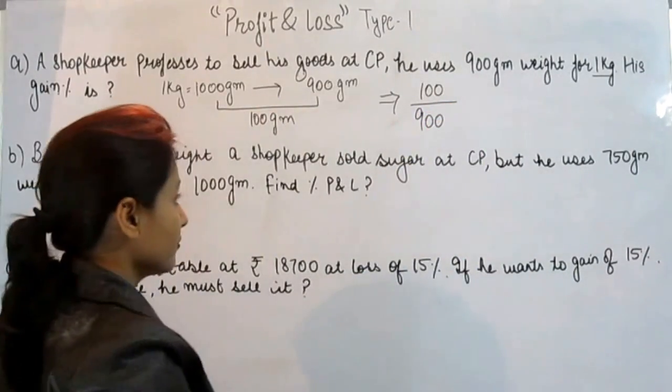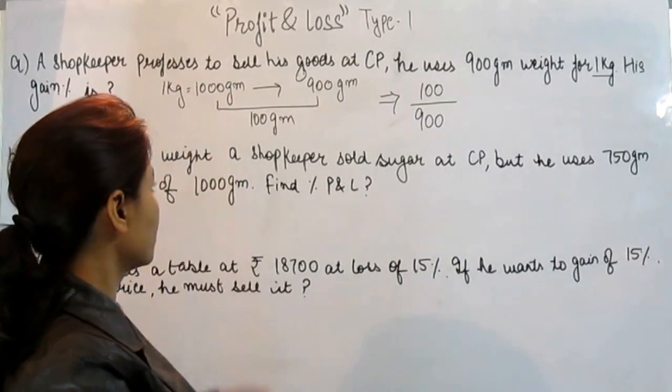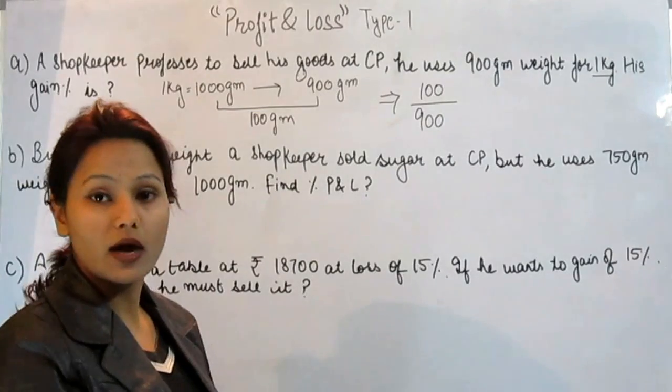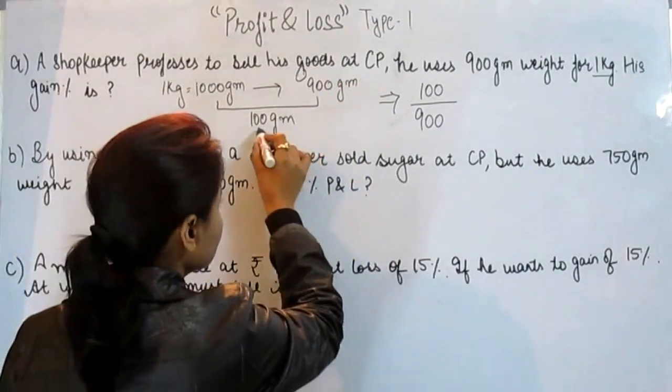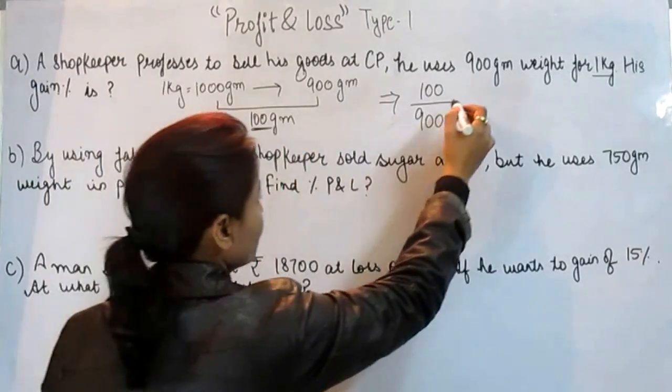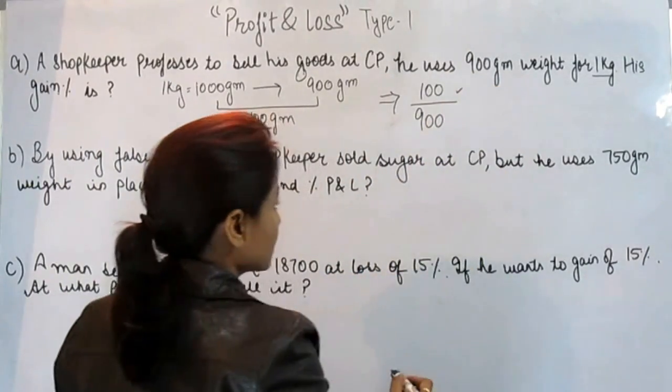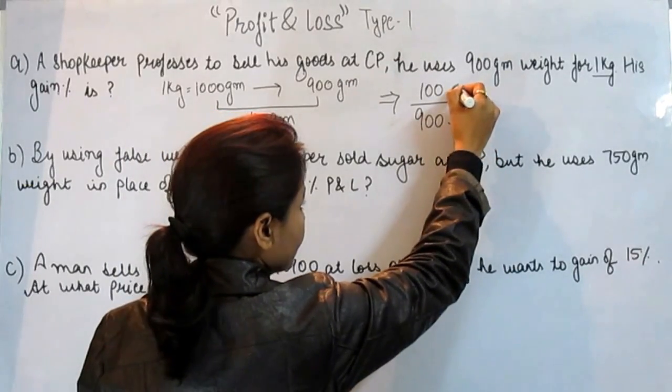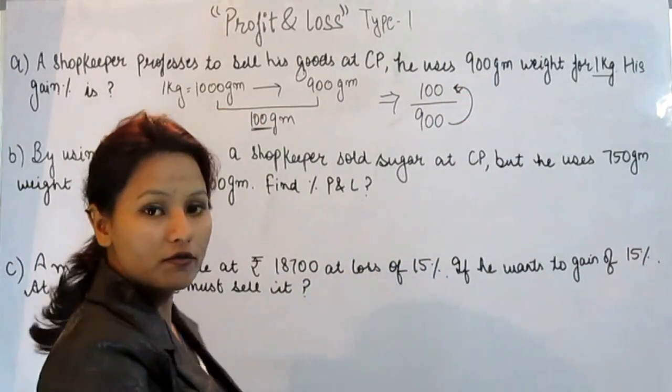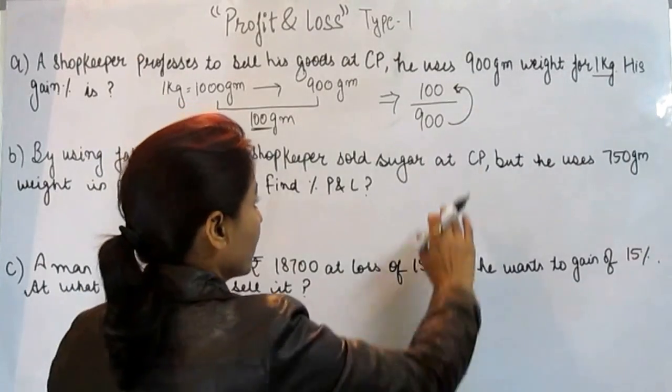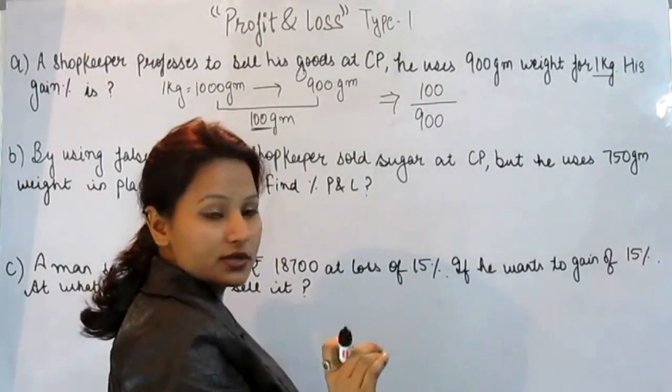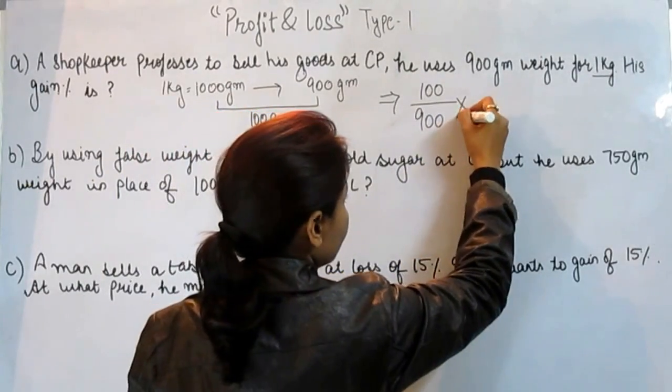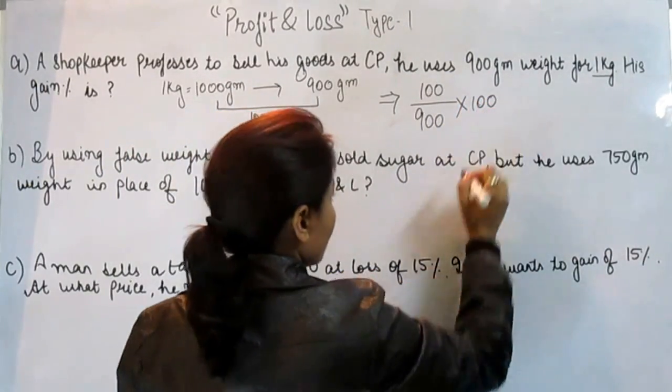He is taking money from the customer for 1000 grams but how much is he giving? Only 900 grams. It means he is in profit of 100 grams. On 900, he is getting profit of 100 grams. And when we have to get the gain percent, we always calculate it on 100.